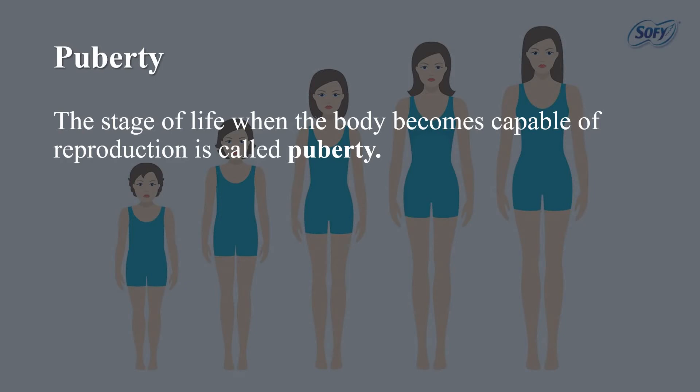Now let us understand the meaning of the term puberty. The stage of life when the body becomes capable of reproduction is called puberty. It varies from person to person, and generally girls attain puberty earlier than boys. At puberty, boys and girls become capable of reproduction, and puberty ends when the adolescent reaches reproductive maturity.